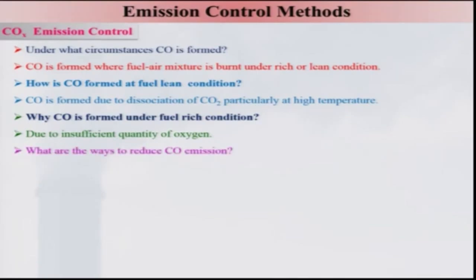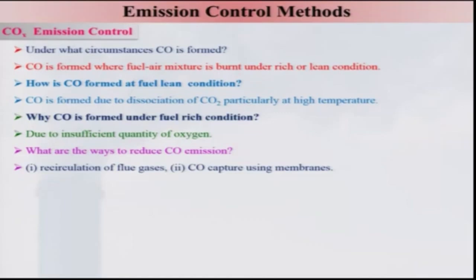What are the ways to reduce carbon monoxide emission? There are two ways: one is recirculation of flue gases such that the carbon monoxide at the exit of the combustion product is reused and converted into carbon dioxide. Another way is to capture the carbon monoxide from the product gases using membrane technology.